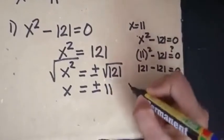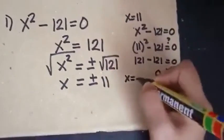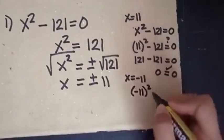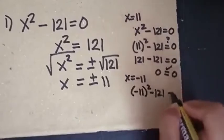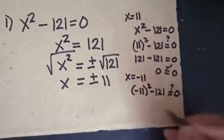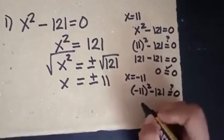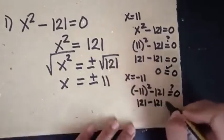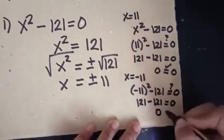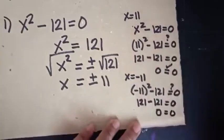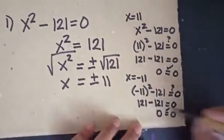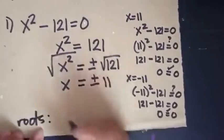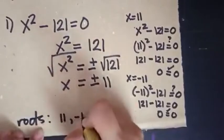For x equals negative 11, we substitute negative 11 into the original equation. Negative 11 squared is positive 121, so 121 minus 121 equals 0. Therefore, 0 equals 0. The roots of the equation are 11 and negative 11.